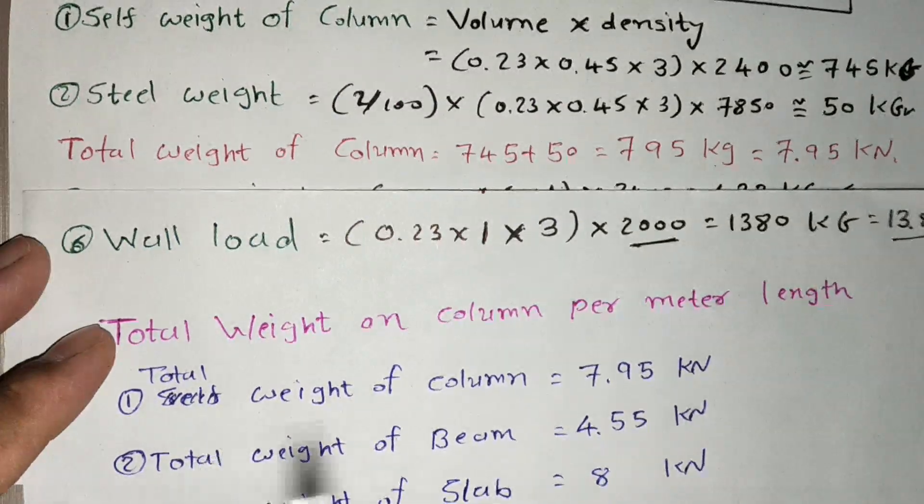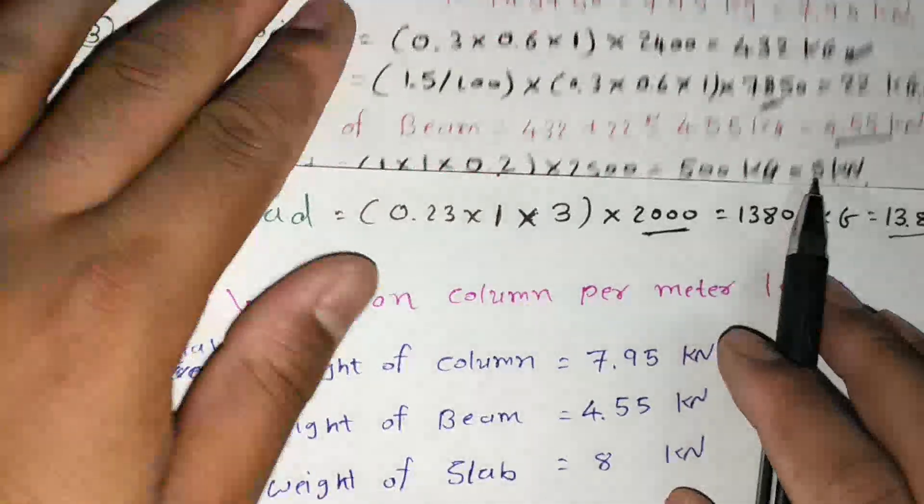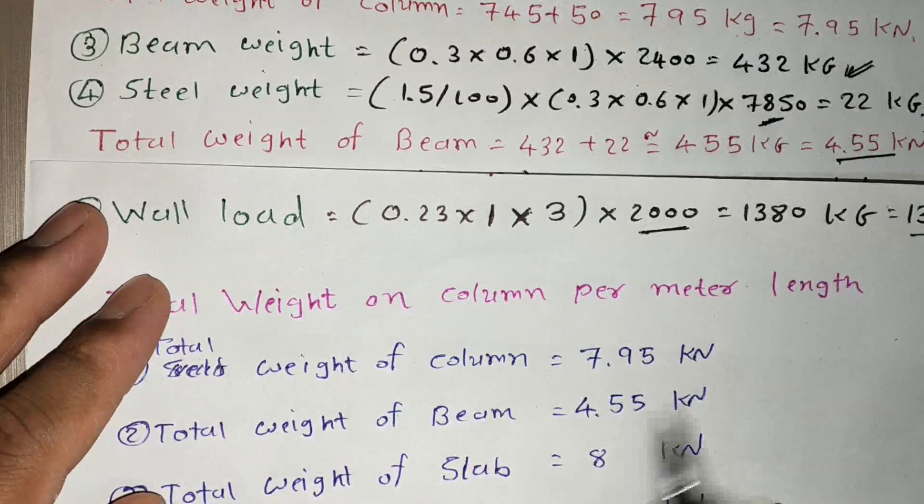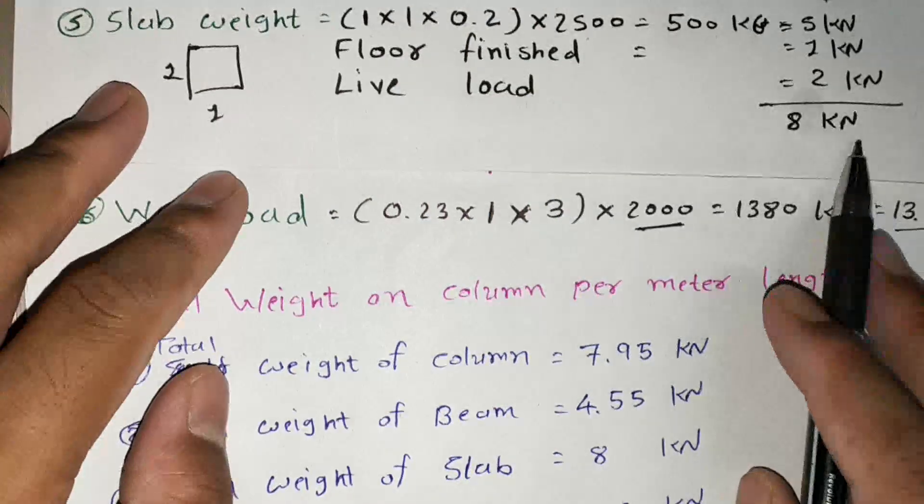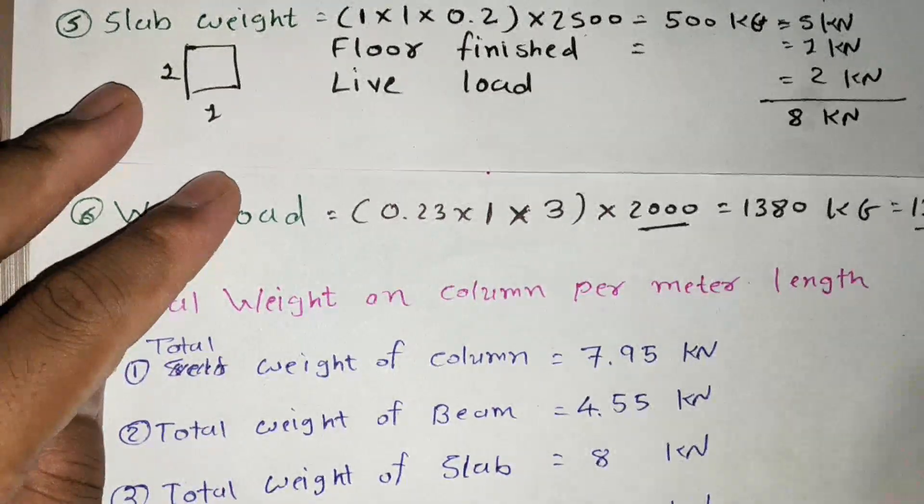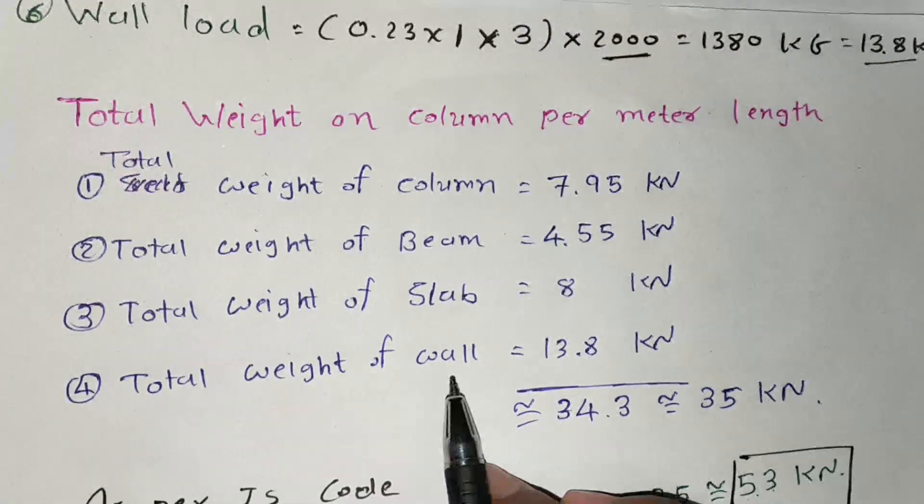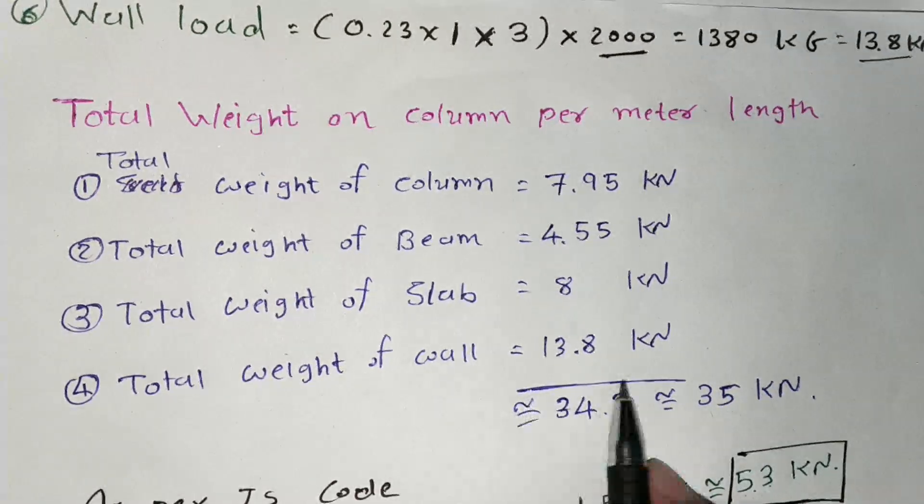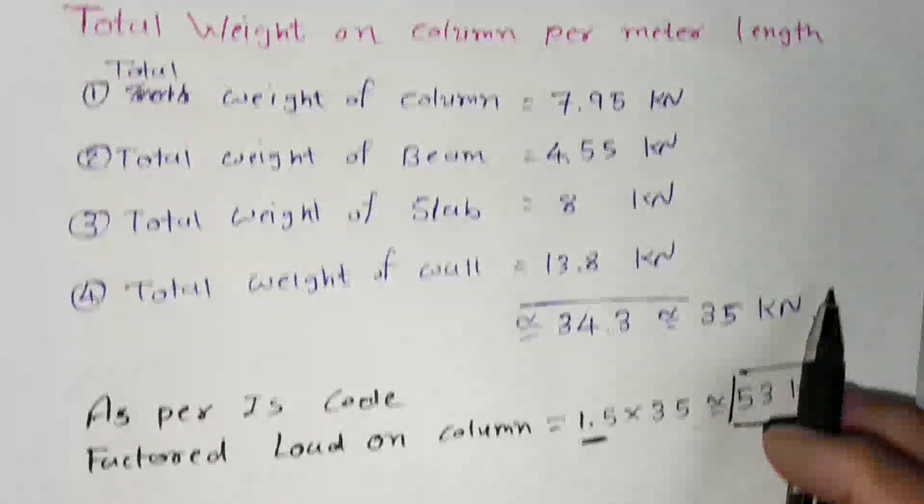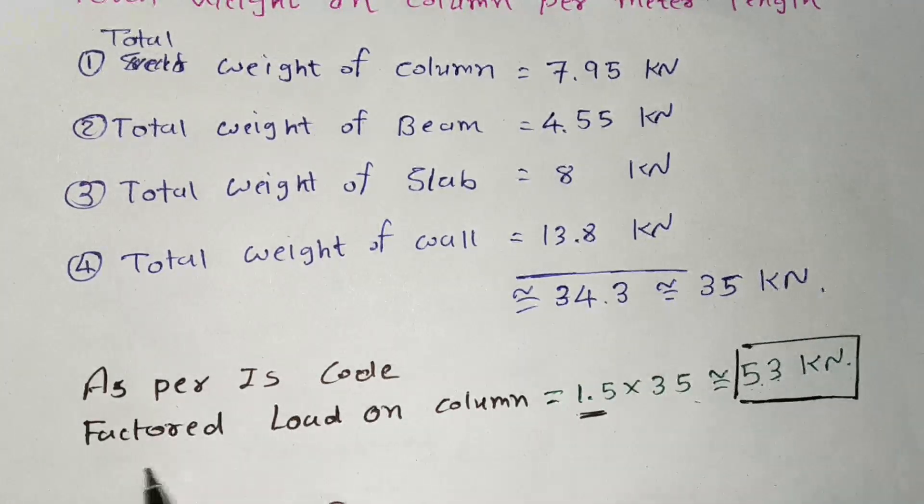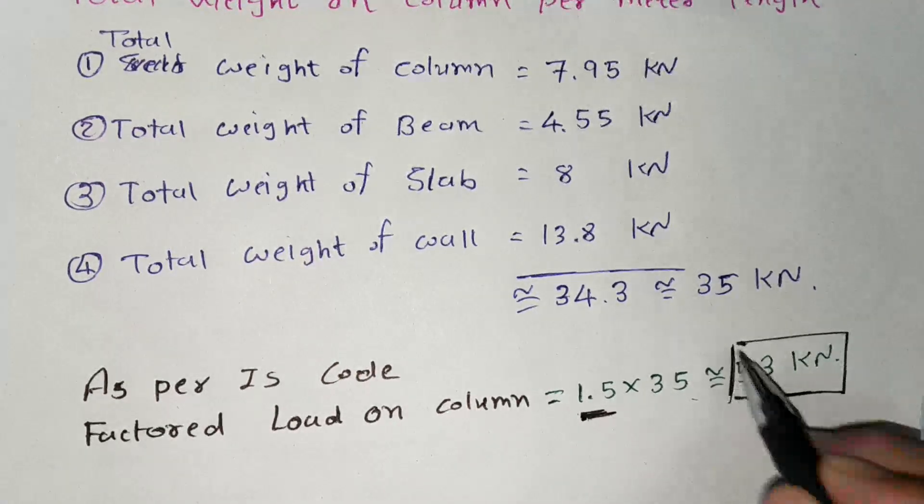So here you can see total weight on column is 7.95, then total weight of beam is 4.55 kN. Then total weight of slab is 8 kN, then total weight of wall is 13.8 kN. So if I do summation 34.3 or 35 kN and as per IS code we have to multiply with the factor. So here 1.5 is our factor. So I got 53 kN.